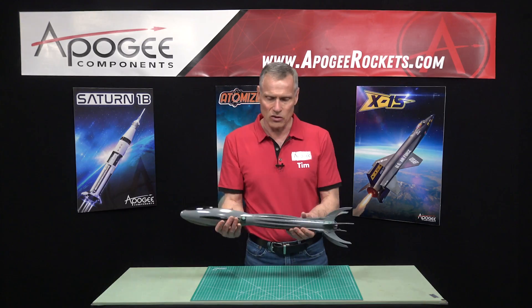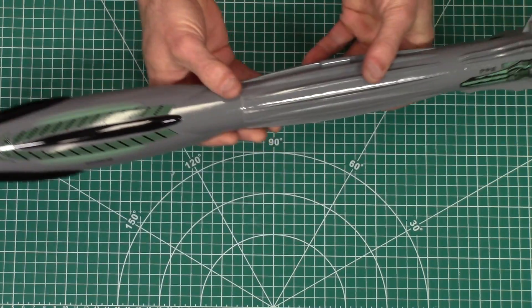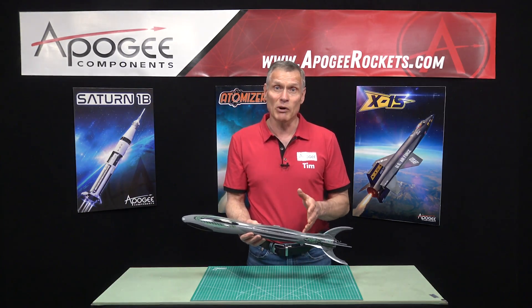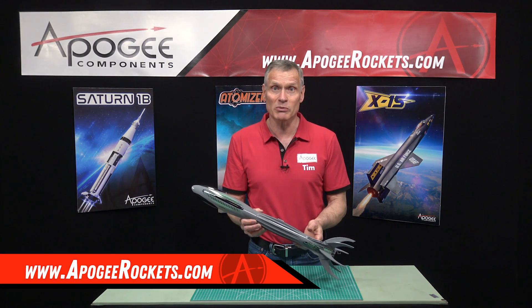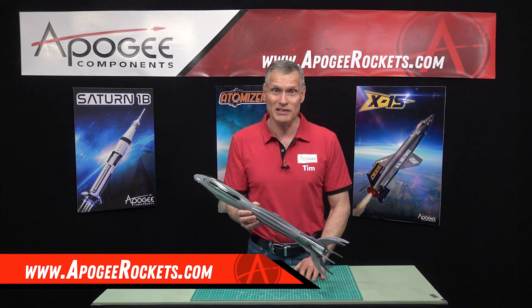It has water slide decals that you can see right here on the front. You'll find this rocket at Apogee Components. Our web address is www.apogeerockets.com.